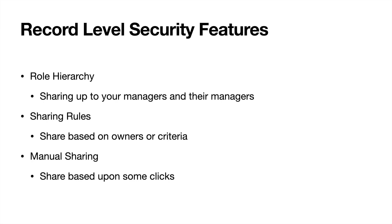Manual sharing is for random one-off scenarios with no set rhyme or reason — like the product expert example. Now that the product expert can see opportunities via their permission set, you need to share the actual record. The product expert only needs to see one or maybe two records out of a hundred they could possibly see. You go ahead and share the record via manual sharing — it's just a button — and then you choose which person you want to share it with.